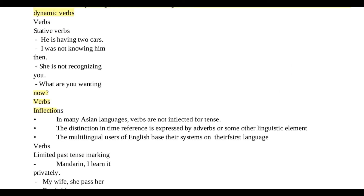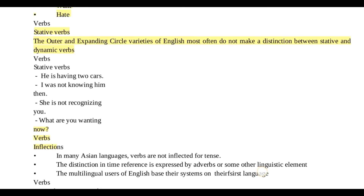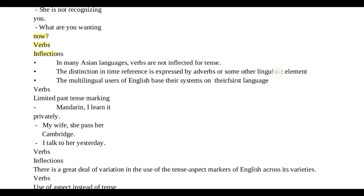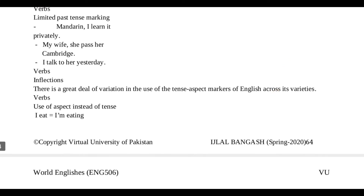یہاں verb inflections کے بارے میں show کیا گیا ہے — بہت سارے students یہاں confused ہو جاتے ہیں۔ Verb inflection grammatical categories کو show کرتا ہے جیسے past tense (-d, -ed)، plural، third person singular، negative، participle وغیرہ۔ یہ سب grammar کو show کرتا ہے — grammar آنی چاہیے تو آپ کو inflections کیا ہوتے ہیں پتا چل جائے گا۔ آپ لوگ انہیں پڑھیں گے تو پتا چلتا جائے گا کہ inflections کیا ہوتے ہیں۔